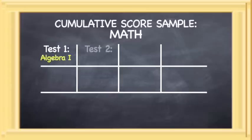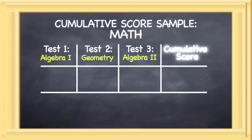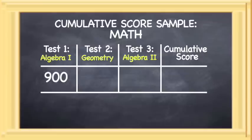Here is another example, using the three math end-of-course exams. In this example, our student scores a minimum passing score of 900 on the Algebra 1 EOC. In Geometry, he scores 1100, which is above the minimum passing level.